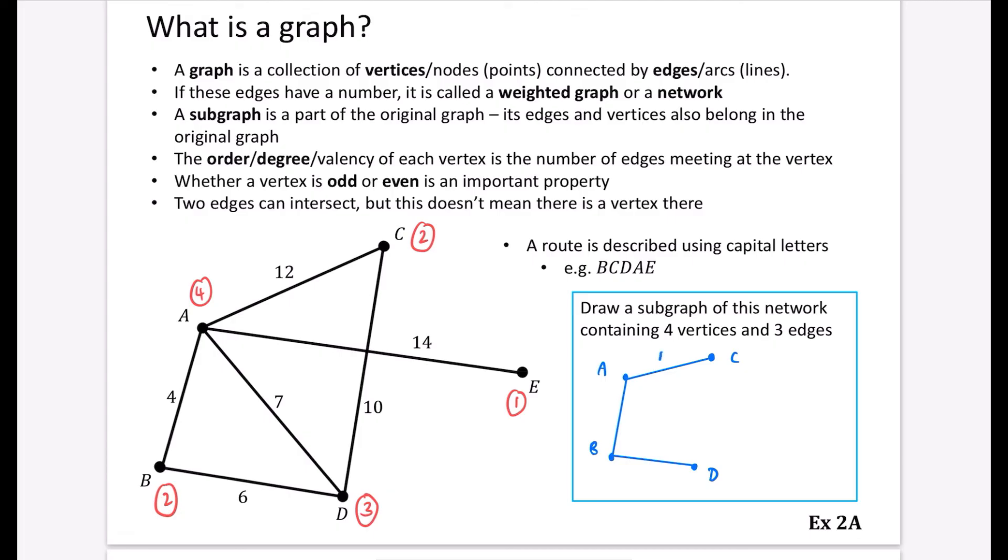And then I'll just put those weights in as well. So we've got the 12, the 4, and the 6. So this is an example of a subgraph because it's just part of this original graph with just a few of those bits that are drawn. And this is really just kind of setting us up with some of the terminology here.